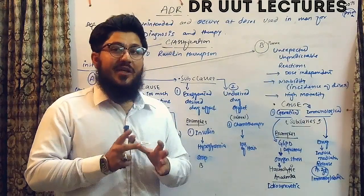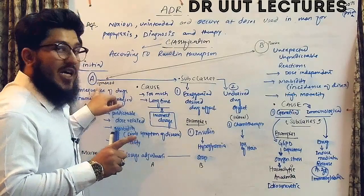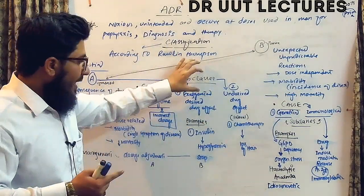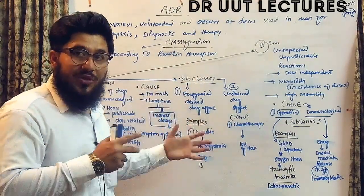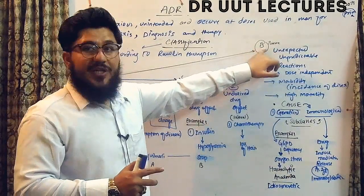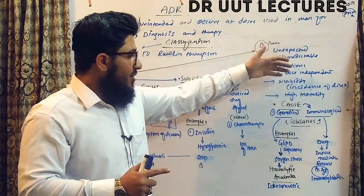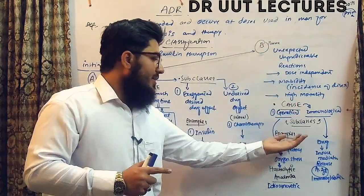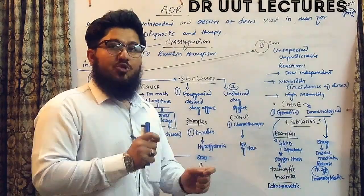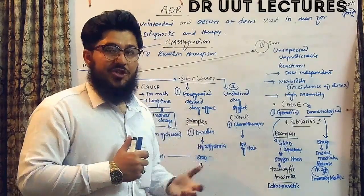Our criteria for explaining type A reactions will cover the other name, definition, cause, subclasses, and examples. Similarly, for type B reactions we will cover the other name, definition, cause, subclasses, and examples to clarify each type. The criteria is the same for both types of reactions in today's discussion.